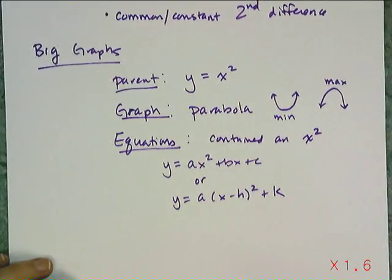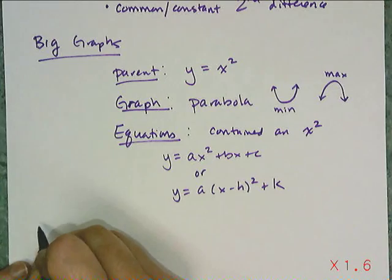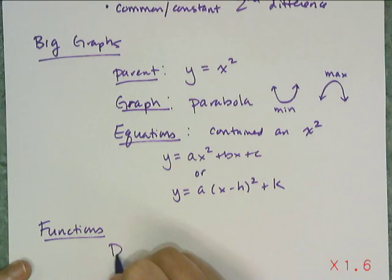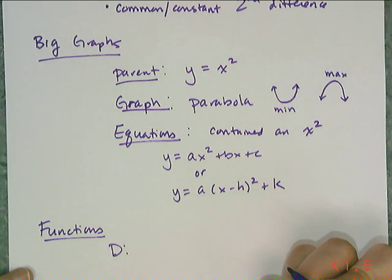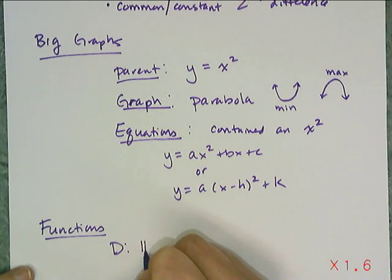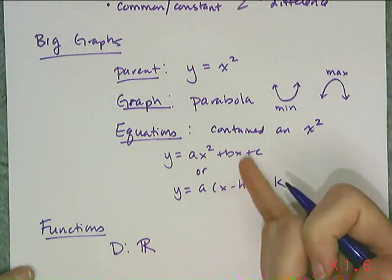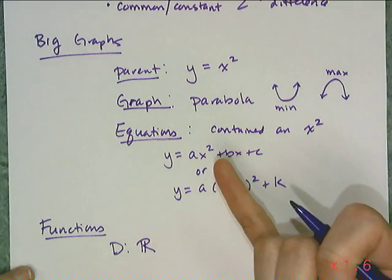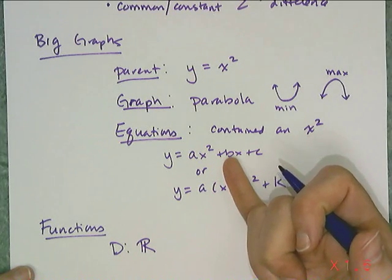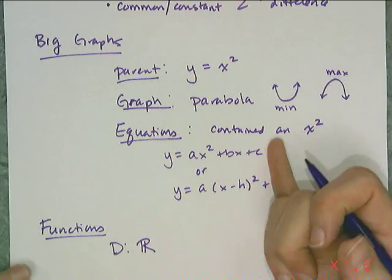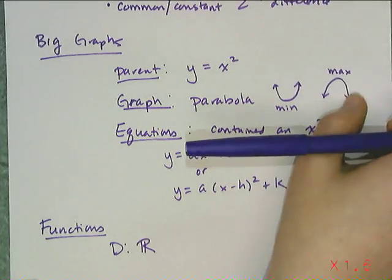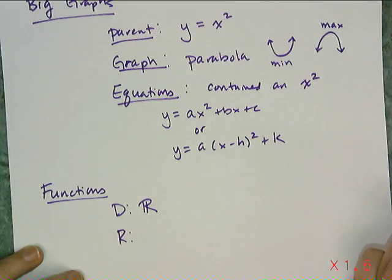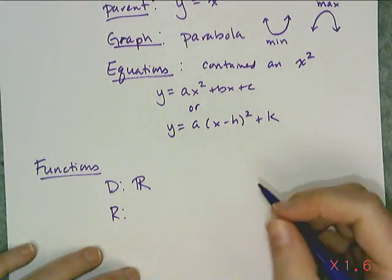And then we talked about functions in general, and we talked about finding domains and ranges. Remember, these functions just like the linear and the exponential will have domains that are all reals, because if I look at either of these two equations I can plug in any real number and square it. I can plug in any real number and multiply it by a constant and I can add them all together. That's always going to work.